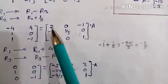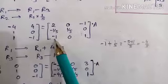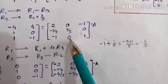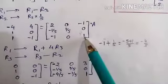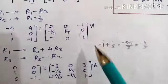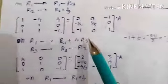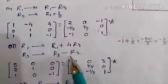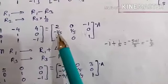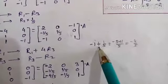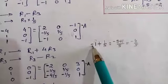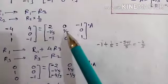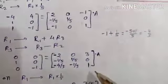R1 plus 4 times R3: 4 into 1 is 4, plus 4 and minus 4 leaves minus 4, then minus 1 times 4 is minus 4, so minus 4 plus 2 gives minus 2. Four times 0 is 0, plus 0 is 0. This is 4, and 1 times 4 is 4, plus minus 1 gives 3. Second row stays as it is. For R3, apply R3 minus R2: minus 1 minus minus 1 upon 5 — so minus 5 divided by 5 plus 1 gives minus 4 upon 5. Zero minus 1 upon 5 is minus 1 upon 5. One minus 0 is 1.